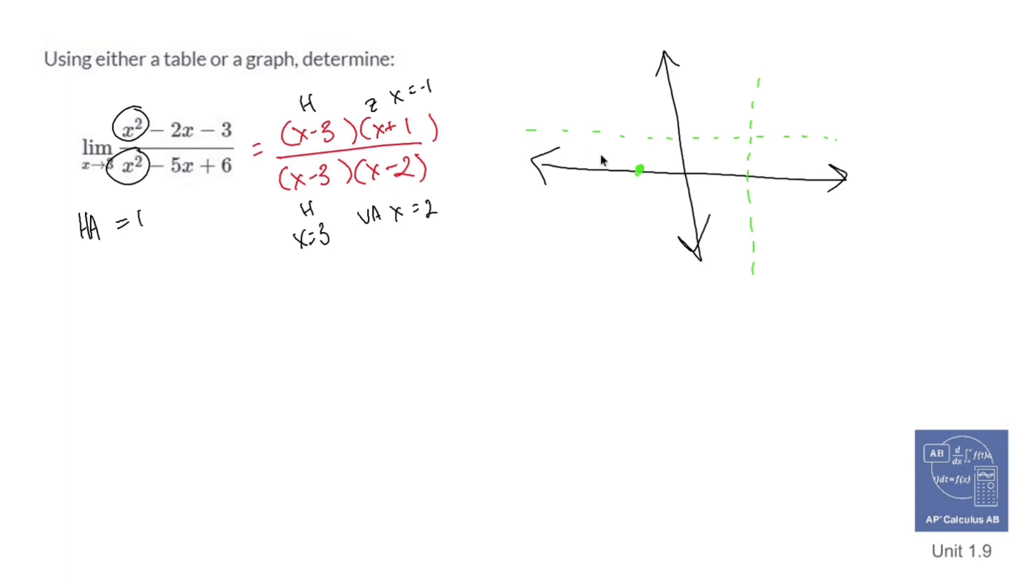And since everything kind of levels out here at positive 1, we are going to get a picture that looks like this. Like that, and then like that. Now, somewhere over here at 3, I'm going to get my hole. So there's 3.